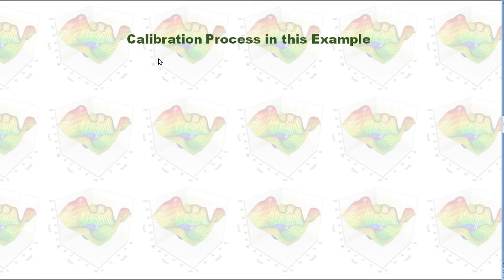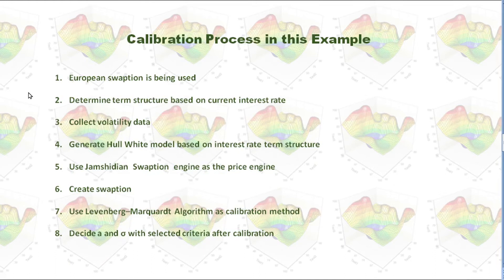Let's take a look at the calibration process in this example. First, I used European Swaption in this example. We need to determine term structure based on current interest rate and collect volatility data. Then, we will generate Hull-White model based on interest rate term structure. We use Jamshidian Swaption engine as the pricing engine. We create Swaption and use Levenberg-Marquardt algorithm as calibration method. Finally, we will decide a and sigma with selected criteria after calibration.